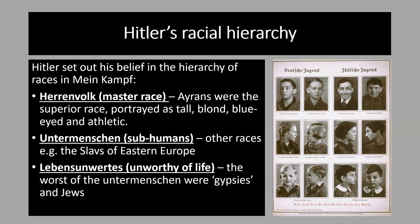Hitler believed that a person's characteristics — their attitudes, abilities, and behavior — were all determined by their racial makeup. Races carried within them traits that were passed from one generation to the next, and no individual could overcome the qualities of race. For Hitler, all of human history could be explained in terms of racial struggle, and he believed there was a hierarchy of races. The Aryan race was the superior race — the Herrenvolk, or master race — portrayed as tall, blonde, blue-eyed and athletic.